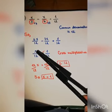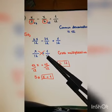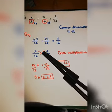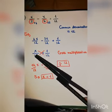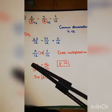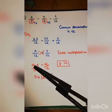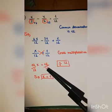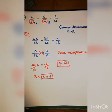Four x minus three x equals x, so x over twelve equals one over twelve. Using cross multiplication, x times twelve equals twelve x, and twelve times one equals twelve. So twelve x equals twelve. Dividing both sides by twelve, x equals one.